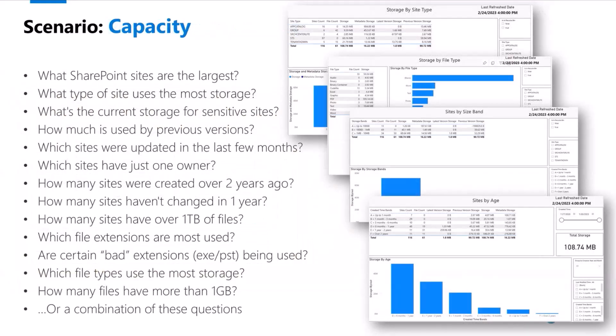This is a mechanism to get rich data and to be able to answer questions about your tenant — about the data that you have. What are the largest sites that you have? What are the sites that were created more than one year ago? What are the top sites that haven't had any new change in the last six months? Where are the large files in your tenant? What file extensions are being used? All these are part of the capacity scenario.